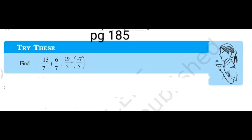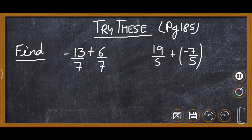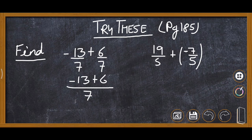This Try These is given in Chapter 9, page number 185. Two questions are given and we are required to find the answer. The first question is -13/7 + 6/7. Since the denominators are the same, we write 7 in the denominator and then -13 + 6, which gives -7.